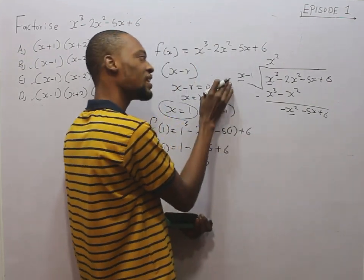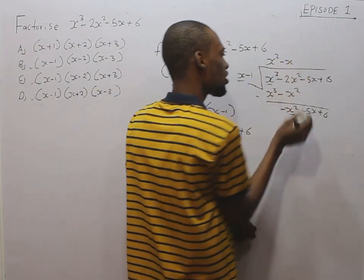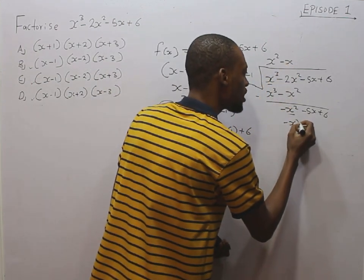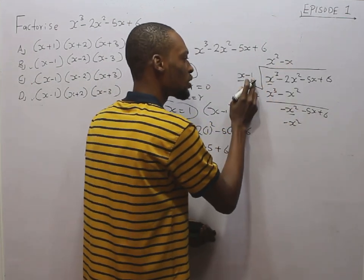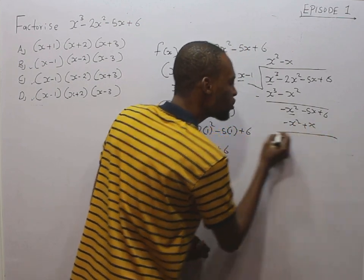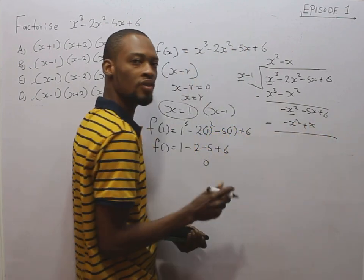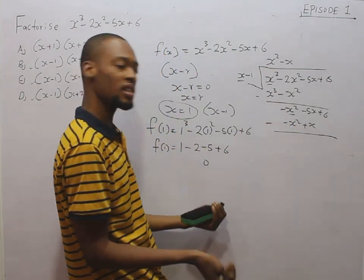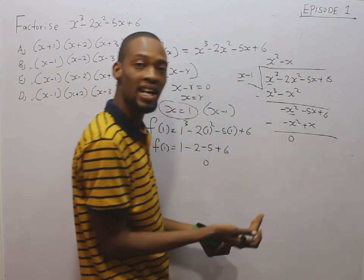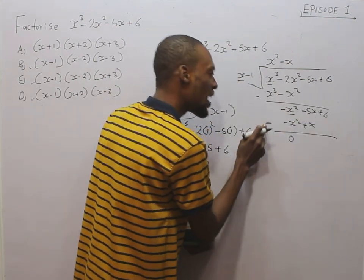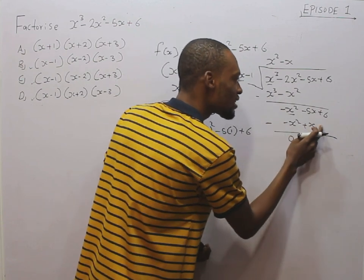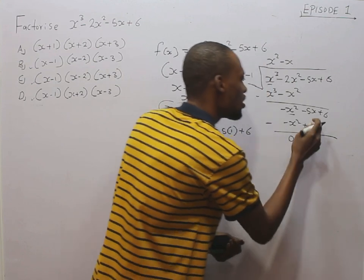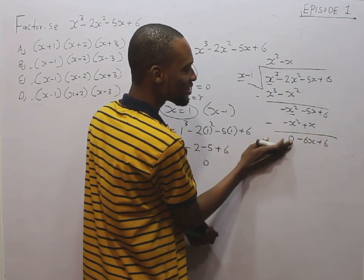Mark this first term, and this first term. Minus s squared divided by s is minus s. Using minus s to multiply everything in the divisor: minus s times s is minus s squared, minus s times minus 1 is plus s. Then subtract. Minus s squared minus minus s squared is 0. Then minus 5s minus s is minus 6s. Plus 6 remains.